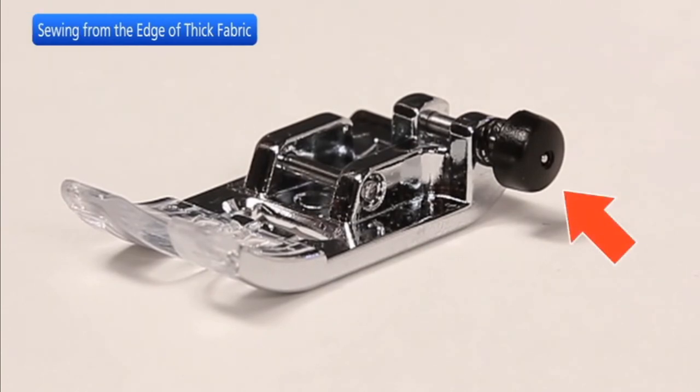The black button on the zigzag foot locks the foot in the horizontal position. This is helpful when starting sewing from the far edge of thick fabrics or sewing across a hem.